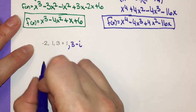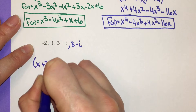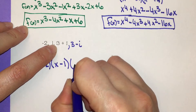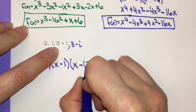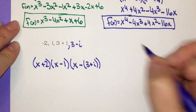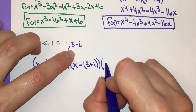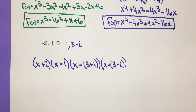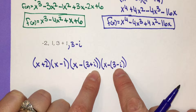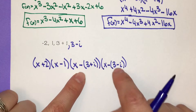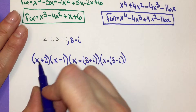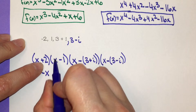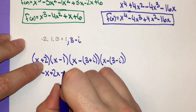So our factors are x plus 2, x minus 1, x minus 3 plus i, and x minus 3 minus i. I'll start multiplying the first two: x times x is x squared, x times negative 1 is negative x, 2 times x is 2x, and 2 times negative 1 is negative 2.